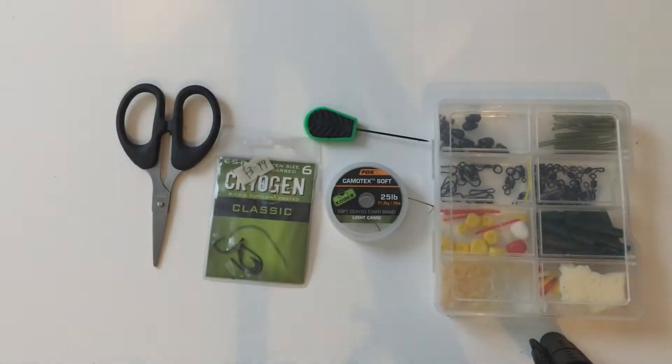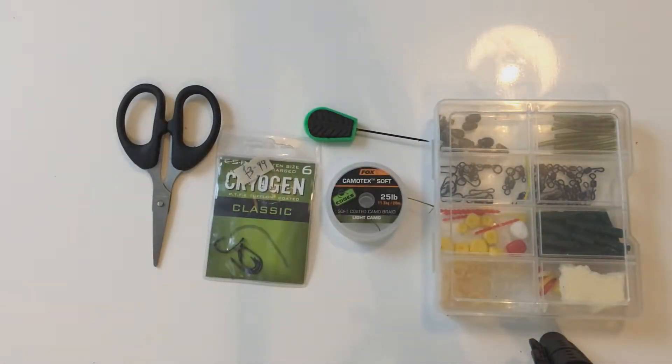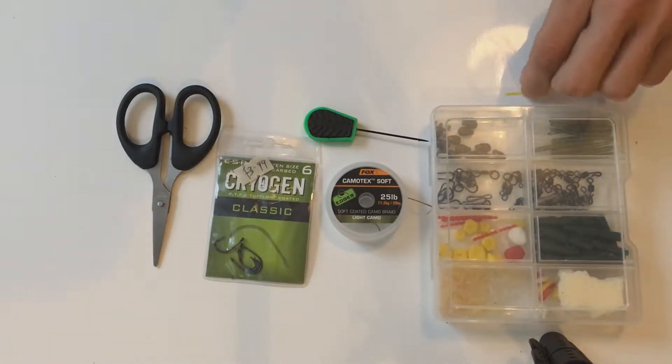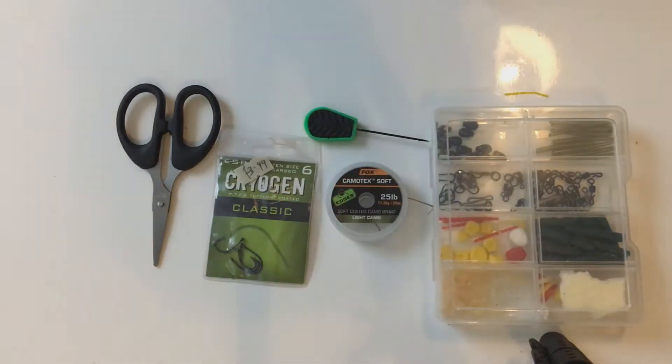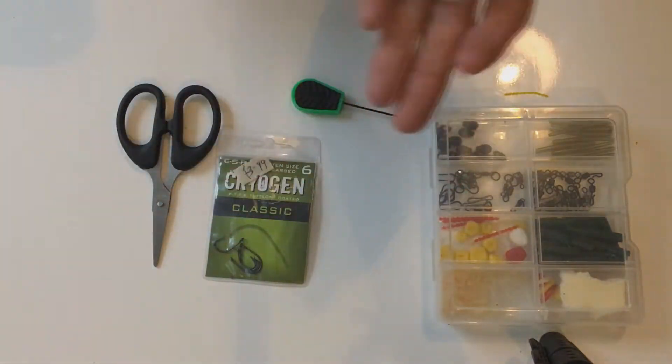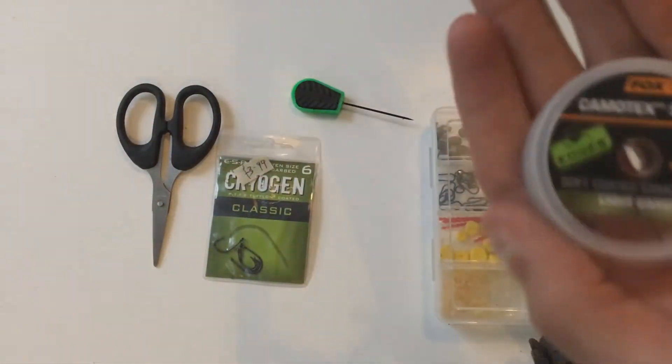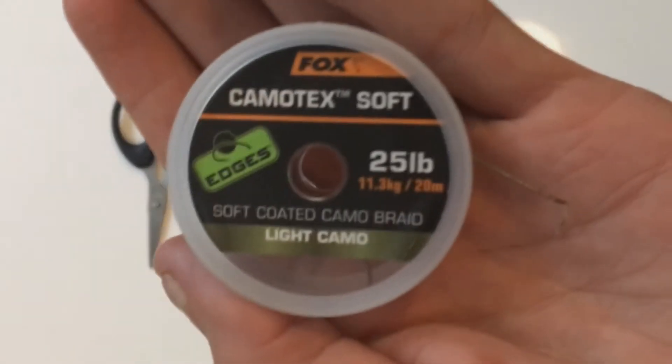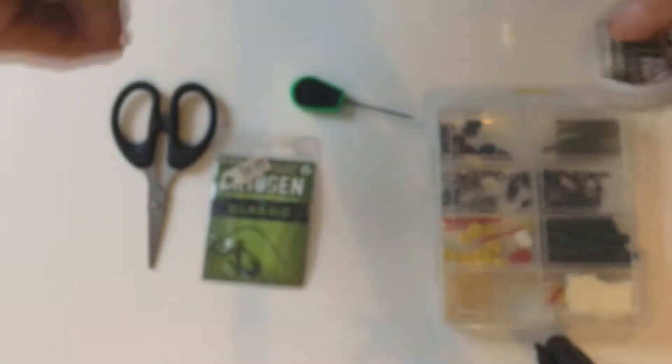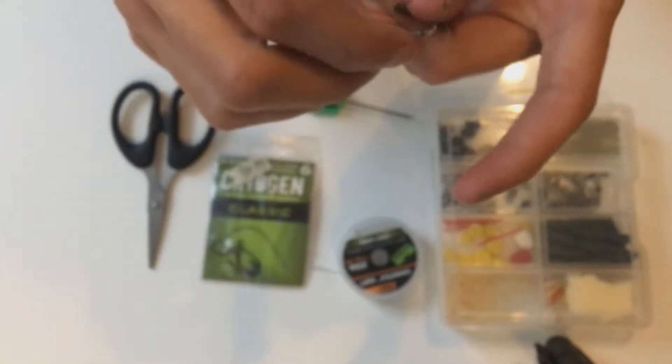Right, components. What we're going to need, this is my bits and gadget box. So we're going to need some sweet corn which is in here, bait stops, baiting needle. Now I use, obviously because this is a PVA bag rig that I'm tying, I use Kryston Kamatex soft. That just enables it to fold down nicely into the bag. So if it was too stiff it would be quite a nightmare.